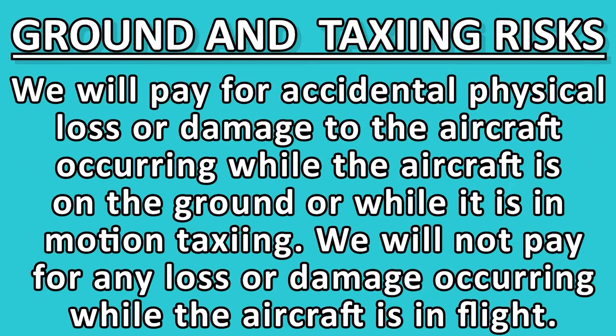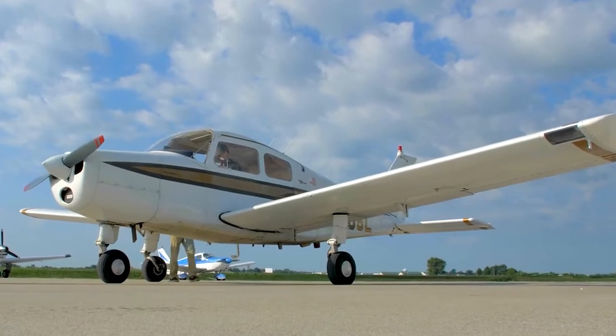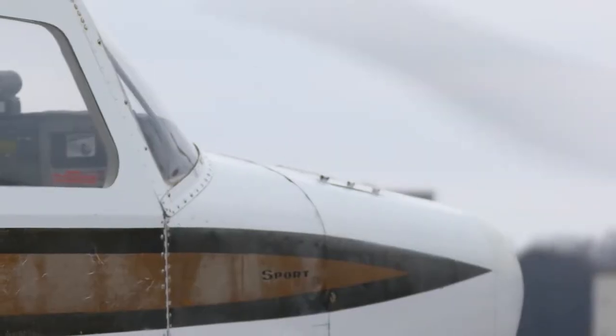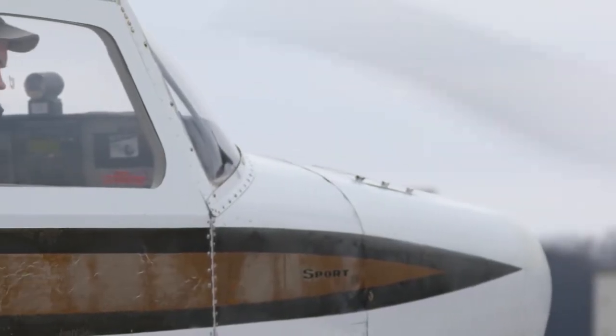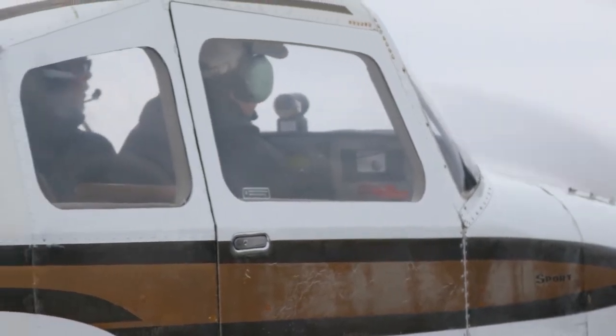Ground and taxiing risks: we will pay for accidental physical loss or damage to the aircraft occurring while the aircraft is on the ground or while it is in motion taxi. We will not pay for any loss or damage occurring while the aircraft is in flight. What this means is it will give you physical damage coverage for the aircraft while it is on the ground with the engine off, and also when you turn on the engine and want to taxi your aircraft around the airport.